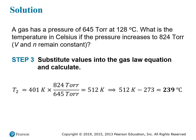Substituting in the values: T1 is 401 K (converted from 128°C), P1 is 645 torr, P2 is 824 torr. The torr units cancel — as long as the pressure unit is the same on both sides, it doesn't matter what it is. This leaves a Kelvin temperature of 512 K. But since the question asks for Celsius, we subtract 273 to get 239 degrees Celsius.